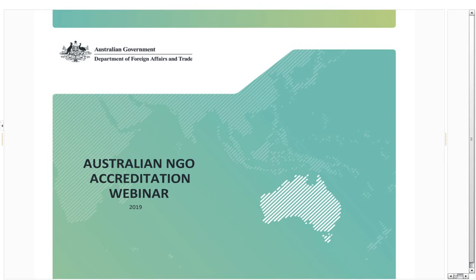Thank you Vicky and thanks everyone for tuning in today. My name is Sarah Dries and I am a member of the ANCP accreditation team. I work alongside Rebecca Lysart, who is the accreditation manager. And today I have joining me Belinda Lucas, who is one of our independent accreditation assessors. Belinda will join a little later on in the presentation to go through the criteria and also some suggestions for preparing for accreditation. If at any stage you can't hear me or if I'm unclear, just type a message into the comment section.